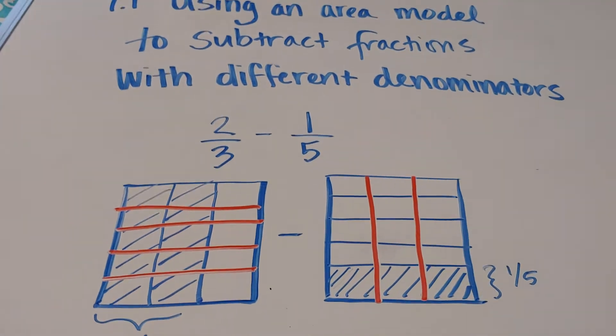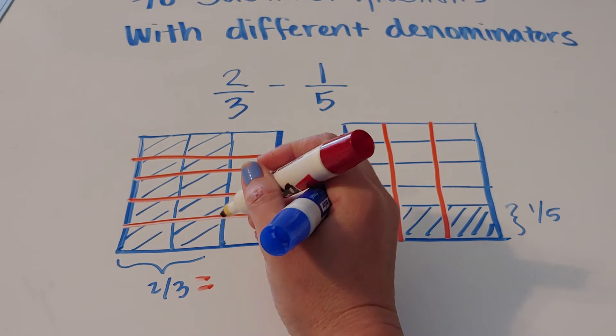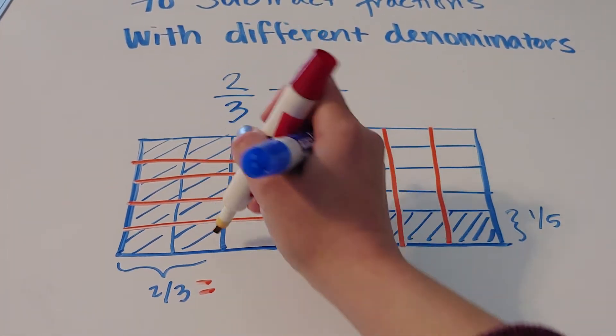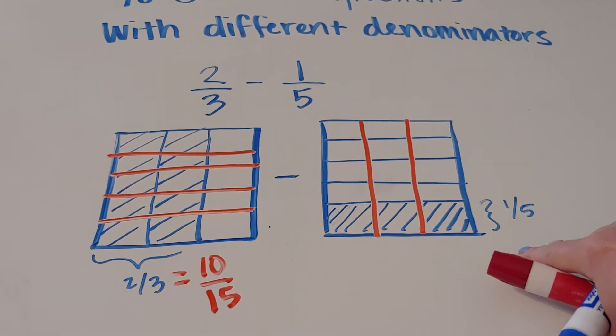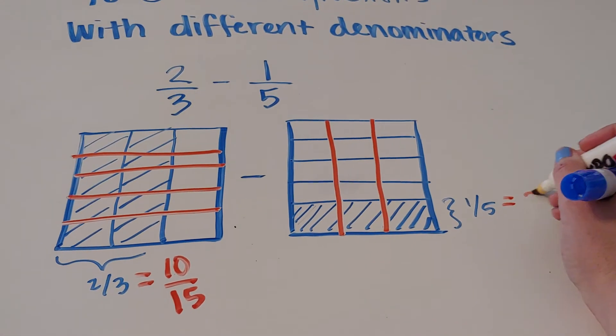So what's happening is that two thirds is now the same thing as 10 out of 15. And one fifth is the same thing as three out of 15.